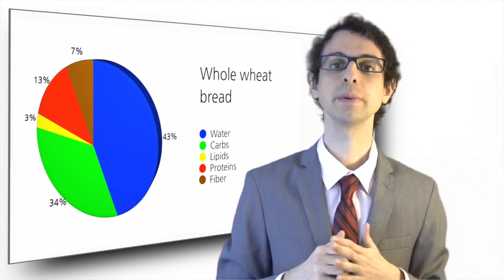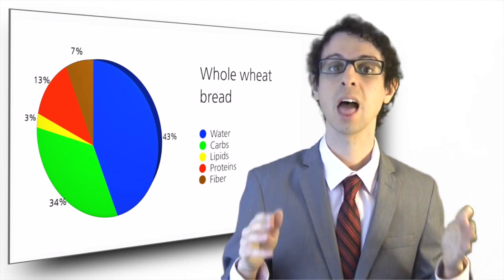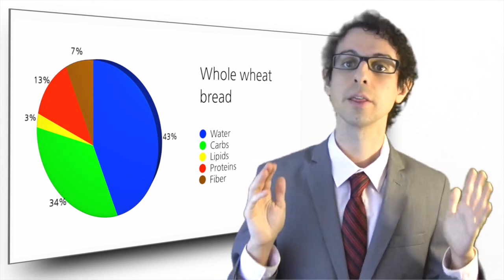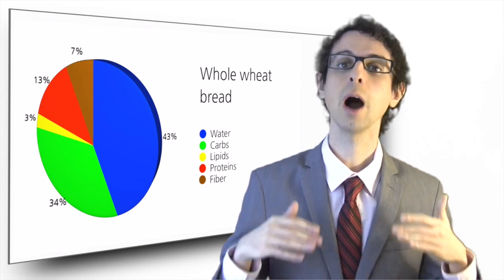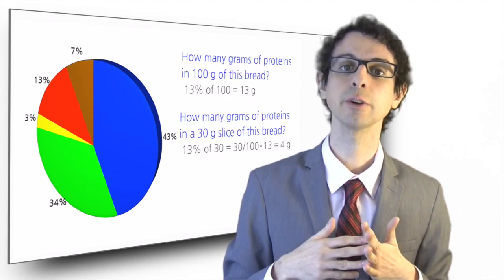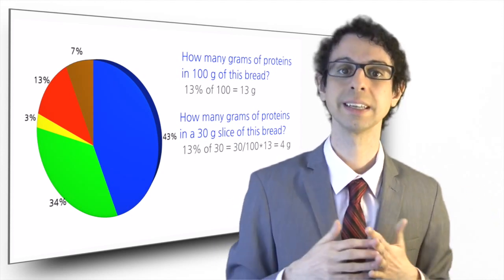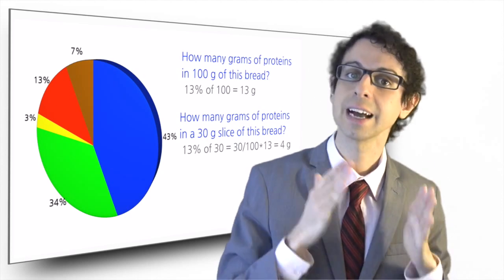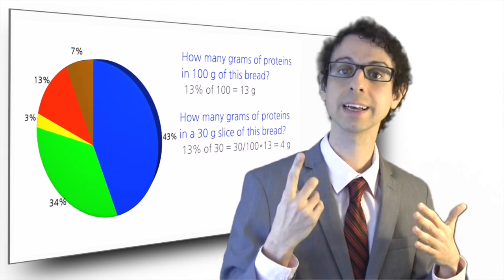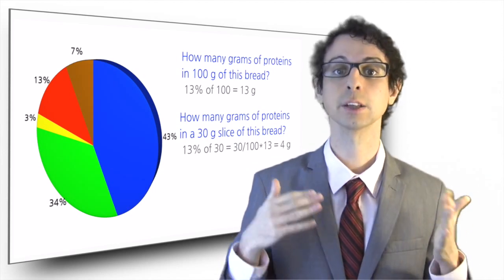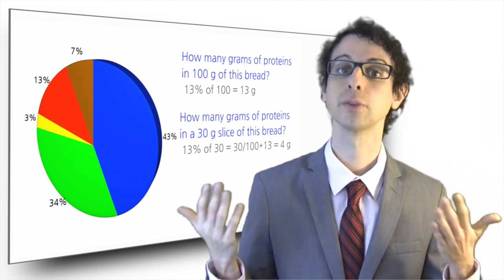As you can see, 43% of the weight of whole wheat bread is accounted for by water, 34% is carbs, 13% is proteins, 7% is fiber, and 3% is lipids. So how many grams of proteins are in 100 grams of this bread? Easy — 13% of 100 is 13, so 13 grams of protein. But a slice of this bread actually weighs 30 grams. So how many grams of proteins do we have in one slice? 13% of 30 — so 30 divided by 100 times 13 — about 4 grams of protein.